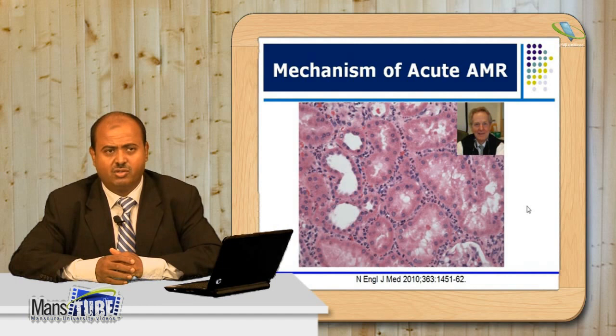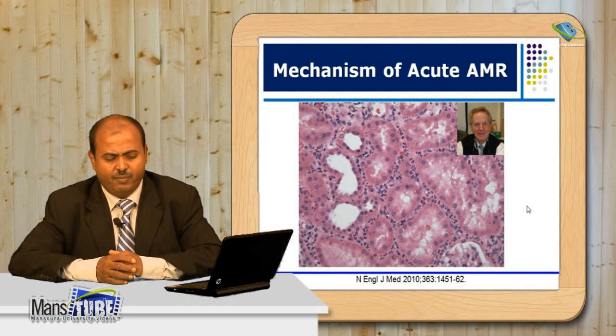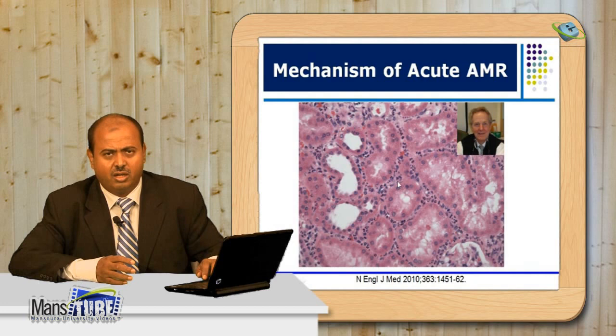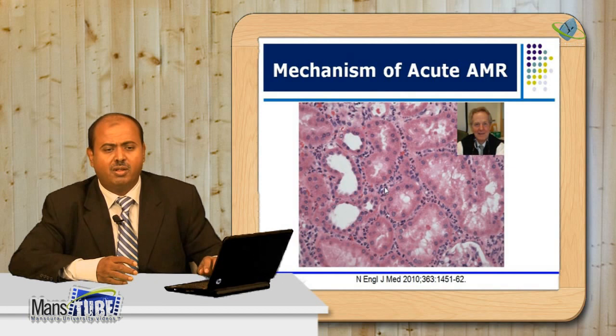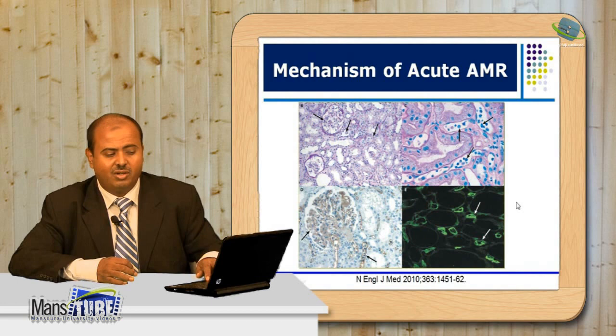Professor Helmut Rennke is one of the most prestigious professors of nephropathology worldwide. This is one of his slides showing a morphological diagnostic criterion of acute antibody-mediated rejection: peritubular capillaritis. You can find tubules here, with no infiltration inside the tubules, but between tubules you find a chain of inflammatory cells — these are peritubular capillaries congested with inflammatory cells.